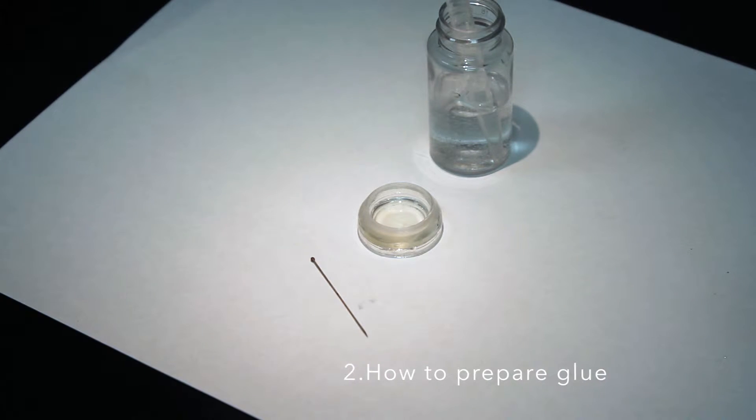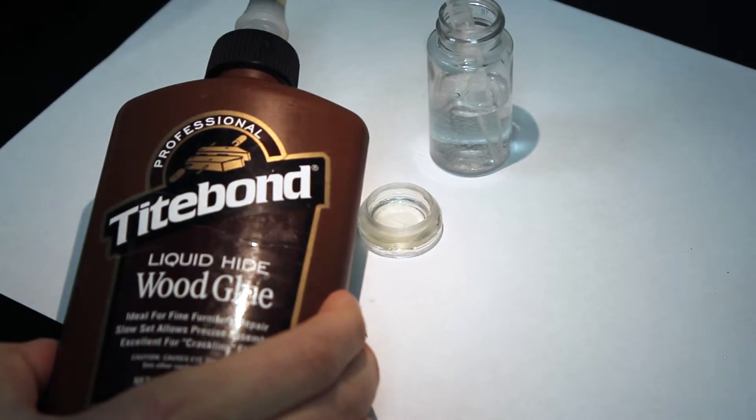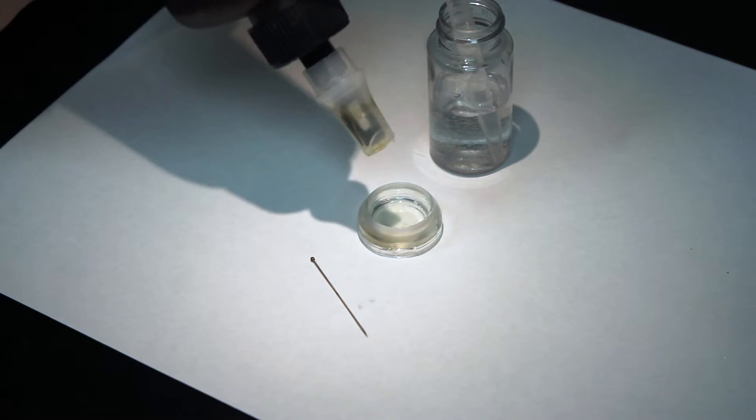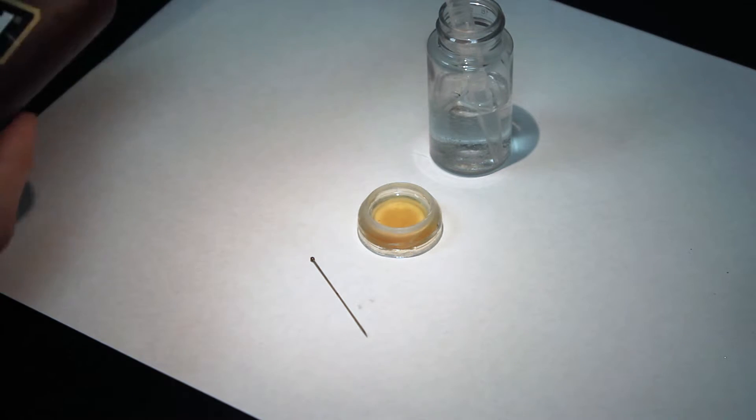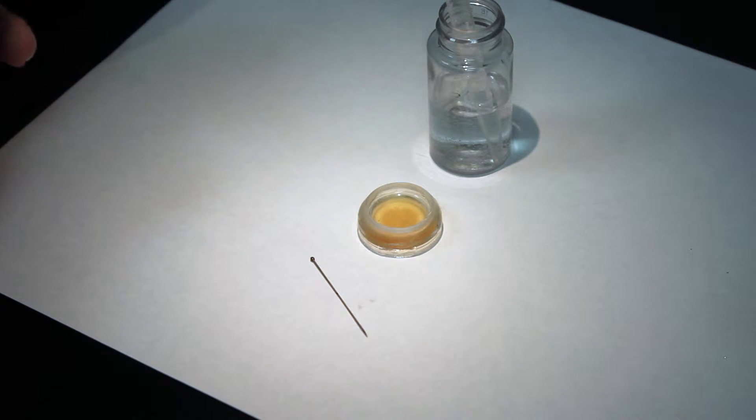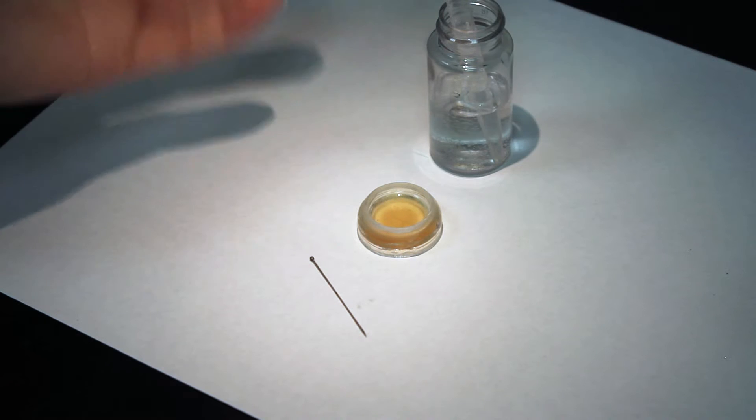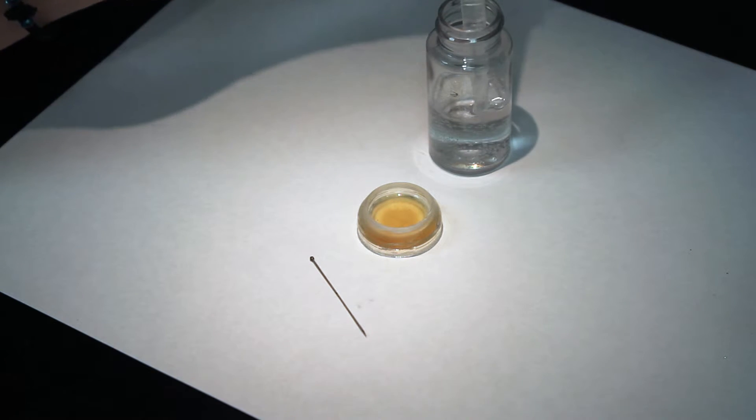Now we need to prepare the glue. Taking our water soluble wood glue, we're going to put a little bit in our Syracuse glass. Right now the glue is a little too thick. The thickness of the glue depends on the size of the organisms. Larger organisms need thicker glue, while smaller ones need more dilute glue.